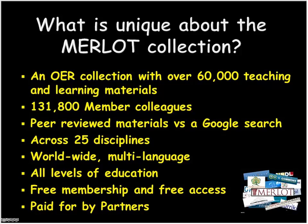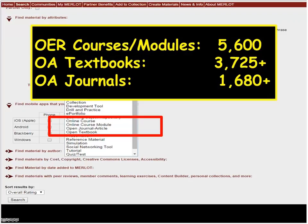The whole of Merlot — our salaries, hosting of the system, et cetera — most of it is paid for by the California State University system, about 60% of our budget. The other 35-40% is paid for by partners in our institution, such as your institution. In Merlot, we look at how many full courses, textbooks, and journals there are — and you can see these numbers here. They don't add up to the 60,000 because there are many other kinds of OER categorized in different ways in Merlot.